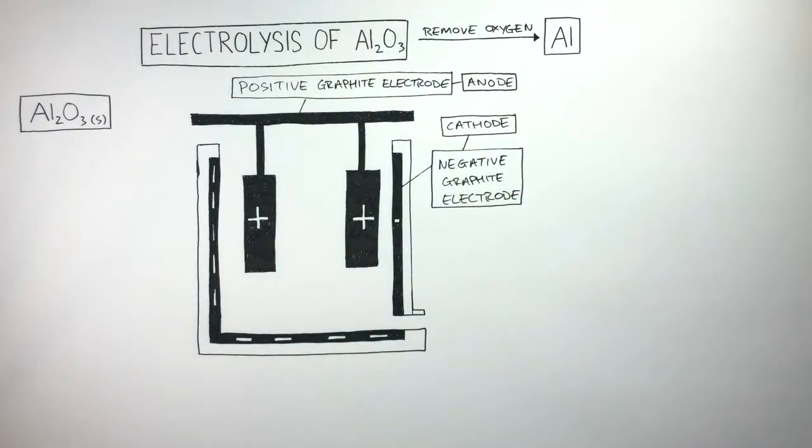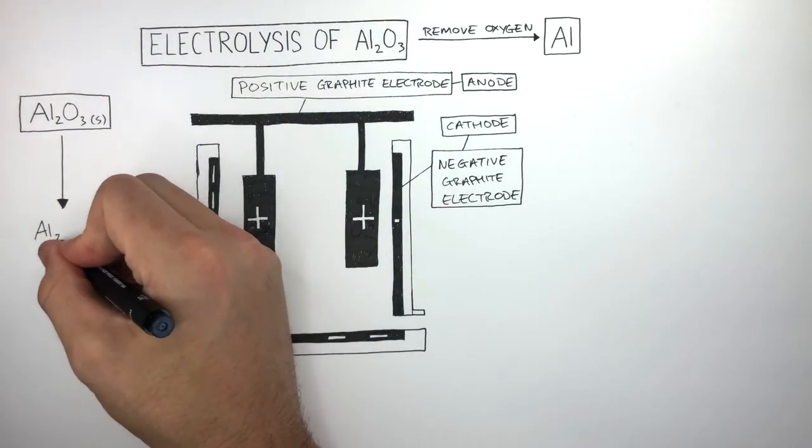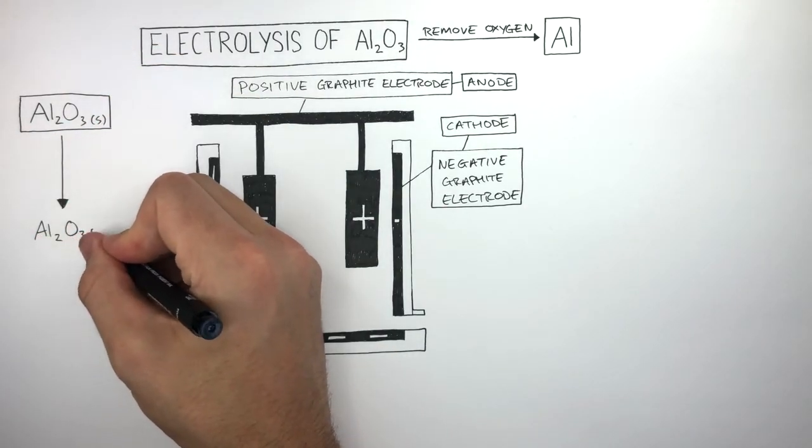Now as we already know, electrolysis does not work when the ionic compound is a solid, as the ions are not free to move. In the electrolysis of Aluminium Oxide, it is molten. We melt it to very high temperatures. The chemical formula of molten Aluminium Oxide is written as Al2O3 alpha liquid.